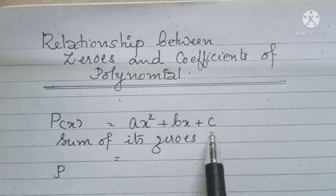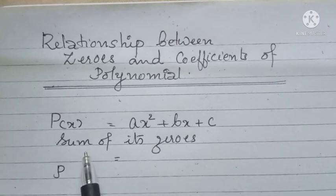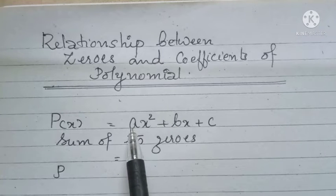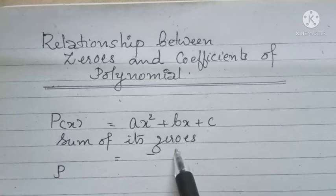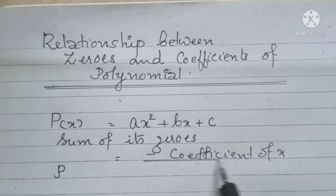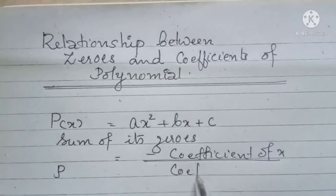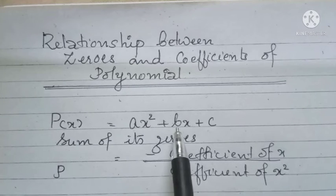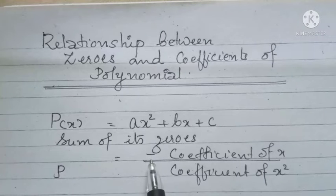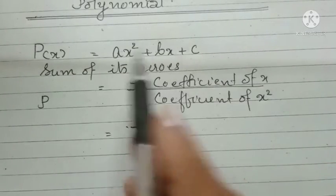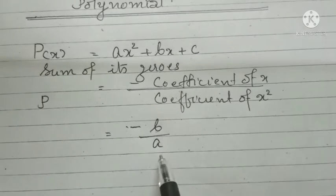P(x) = Ax² + Bx + C is a quadratic polynomial. The sum of its zeros is minus B by A, that is, the negative of the coefficient of x divided by the coefficient of x². Since B is the coefficient of x and A is the coefficient of x², the sum of zeros equals minus B by A.